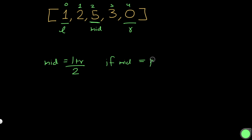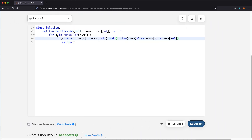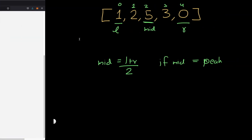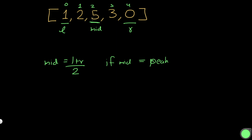Using the example [1, 2, 5, 3, 4], mid is at index 2, which is 5. We check: is 5 greater than 2? Yes. Is 5 greater than 3? Yes. So 5 is a peak and we directly return mid. That's the straightforward case. Now let's change the example to work through a more complex condition.